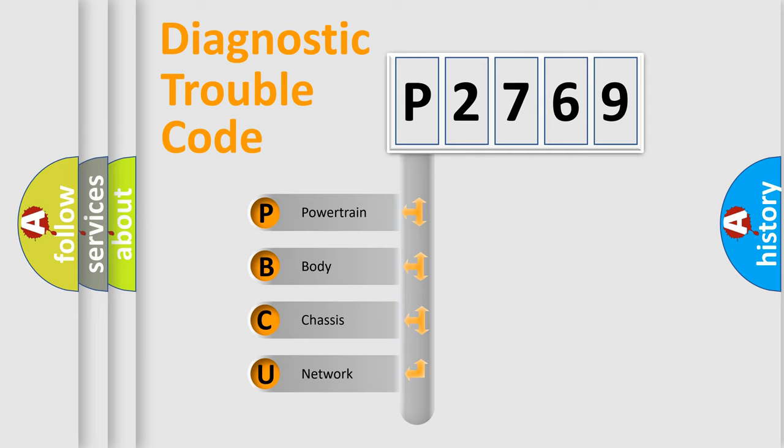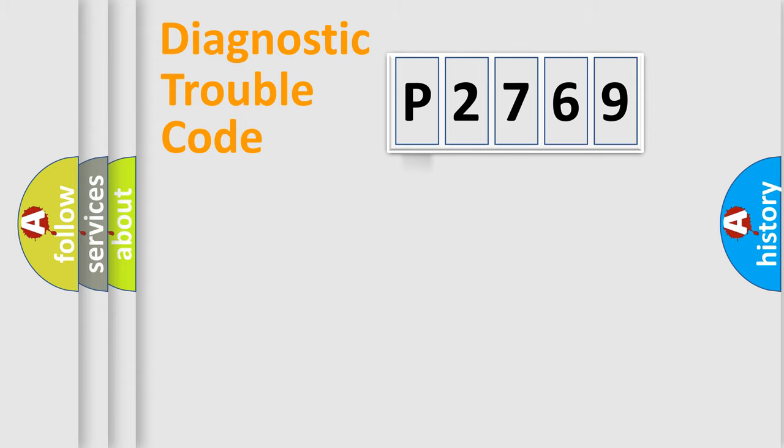We divide the electric system of automobile into four basic units: Powertrain, Body, Chassis, Network. This distribution is defined in the first character code.